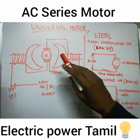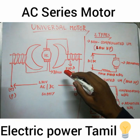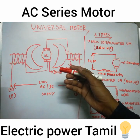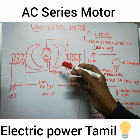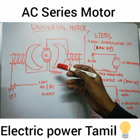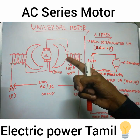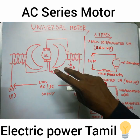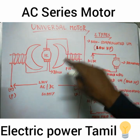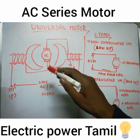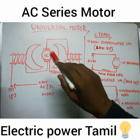Let's look at the universal motor. This universal motor is related to the DC series motor. Here we have two issues. There is a field winding and an armature.